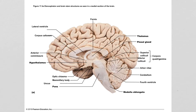Now we're looking at a mid-sagittal section of the brain with lots of really important structures. This white matter is called the corpus callosum, made out of axons that communicate between the right and left hemispheres — very important for keeping our hemispheres in constant communication. Below that, we have the fornix.